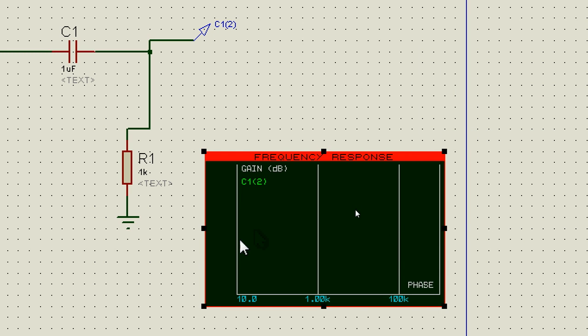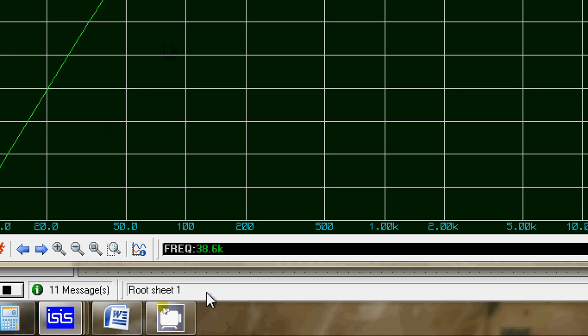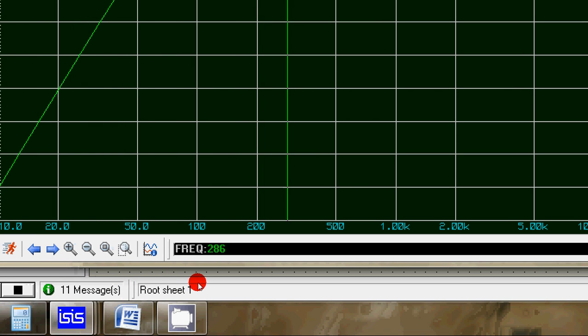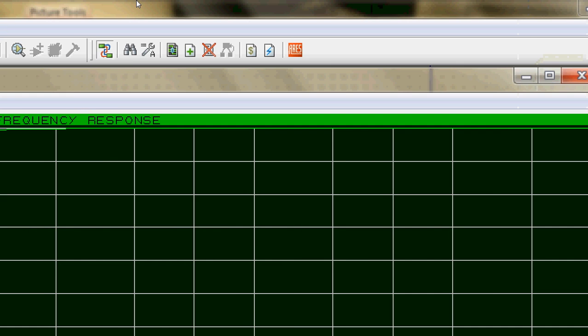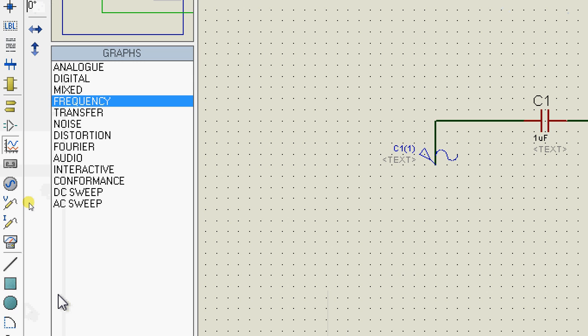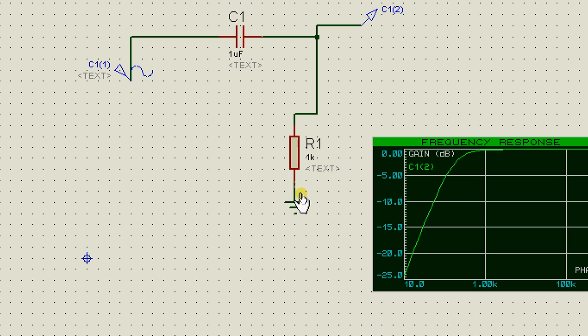So yeah, and this is how the frequency response looks like. So since the values of C and R are same the cutoff frequency is still 160 hertz. And corresponding to this point the gain is minus three decibels which is the same. So this is the high pass filter.